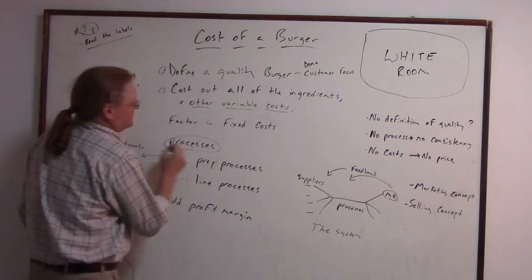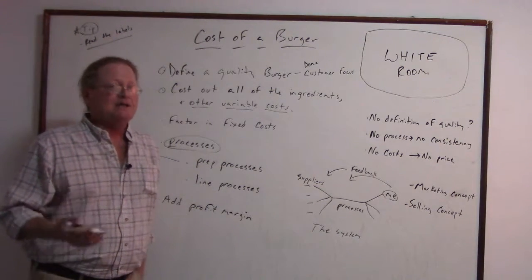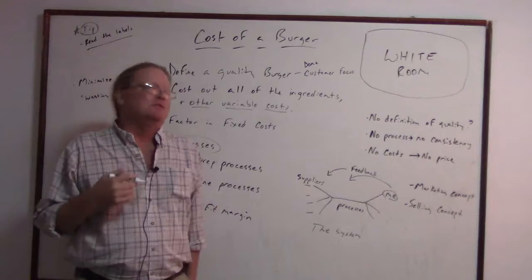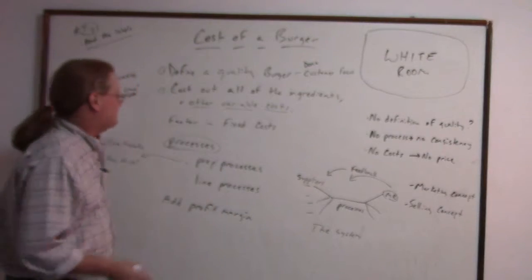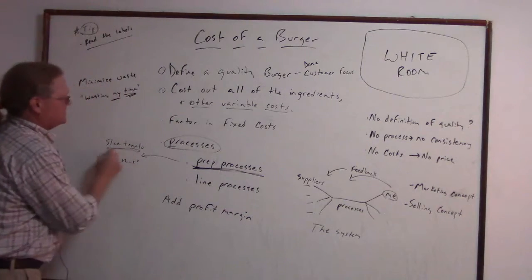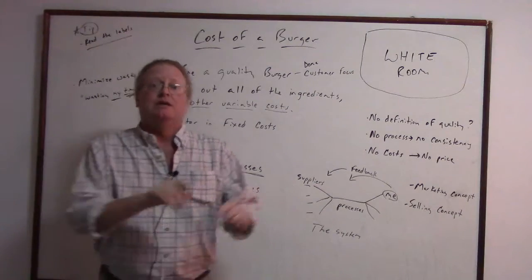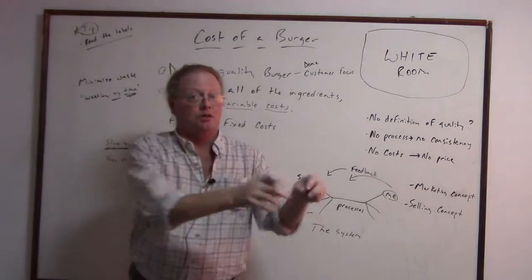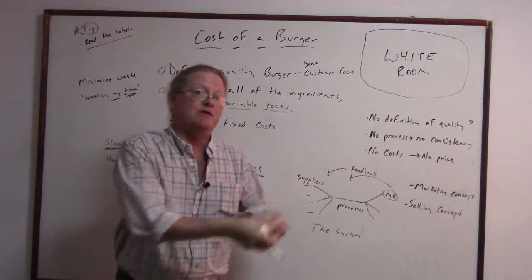We have the processes. When the customer comes up to the window, that might not be the best time to be slicing the lettuce, dicing the onions, slicing the tomato, looking for the jalapeños, looking for the cheese and all of that stuff. You can separate it into prep processes — such as slice the tomato — and then you have the line process where the burger is cooked. While the burger is cooking, we need to toast the buns, load up the buns, put the cheese on the meat, assemble, wrap, bag, done.